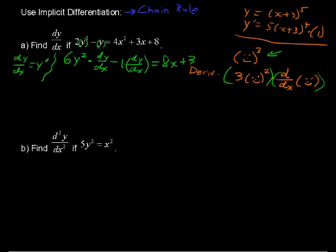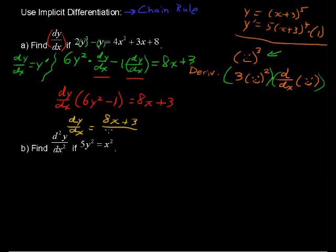Now what we want to do is solve for dy/dx, because that's what we want to get to. So factor that out. We have dy/dx multiplied by (6y^2 - 1) equals 8x + 3. Then we're going to divide by 6y^2 - 1, and you get dy/dx equals (8x + 3) / (6y^2 - 1).